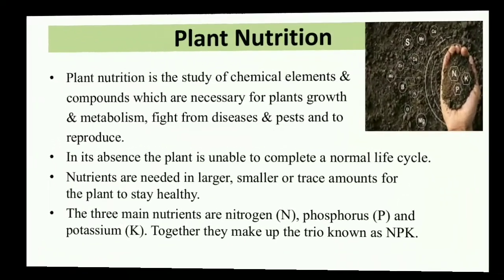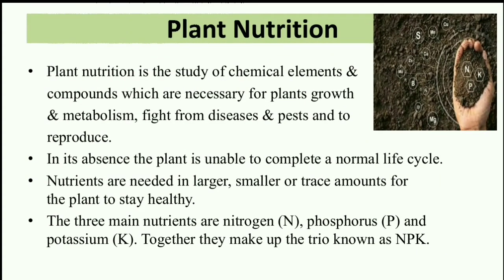First we discuss about what is plant nutrition. Plant nutrition is a study of chemical elements and compounds which are necessary for plant growth and metabolism. Plant nutrients are chemical compounds that help plants in growth and metabolism. They provide protection against disease and pests and they also help in reproduction. If these plant nutrients are not available, then plants will not complete their normal life cycle.